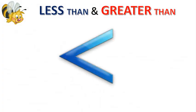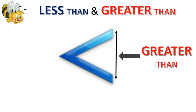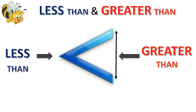Now let's understand the concept of less than and greater than. Consider the given picture. Here, the wide open mouth represents greater than, and the other side, the closed mouth, represents less than. This is about the greater than and less than symbol. It can also be better understood by remembering this alligator — the wide open mouth eats the bigger number, so it is greater than.